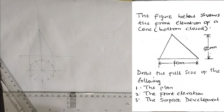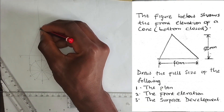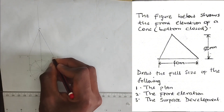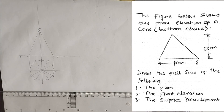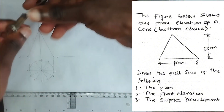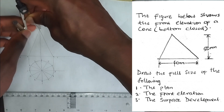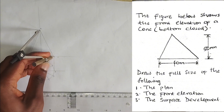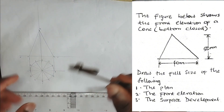From here I draw lines to form the front elevation. I label the apex as point O, this point as A, and this point as B. Now we are asked to draw the surface development of the cone. To do that, we pick the true length, which is length OB.